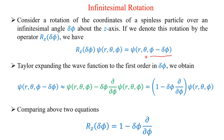So the wave function will become psi R, which is a function of R, theta, and phi minus delta phi. Now we use a Taylor series expansion for this wave function — that is psi of R, theta, phi minus delta phi — then it will become like what I have shown in green color. We have taken only the first order and ignored the higher orders.